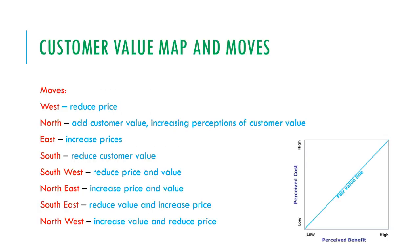The customer value map — shown in the bottom right of the diagram — plots perceived benefit against perceived cost, with a fair value line that you try to place your product on. In terms of moves: you can move west by reducing your price, north by adding customer value and increasing perceptions of value, east by increasing prices, south by reducing customer value, south-west by reducing price and value, north-east by increasing price and value, south-east by reducing value and increasing price, and north-west by increasing value and reducing price.